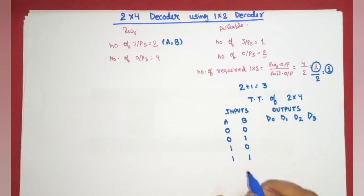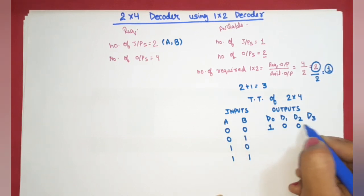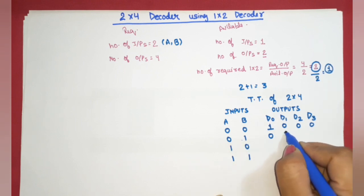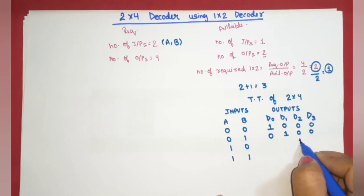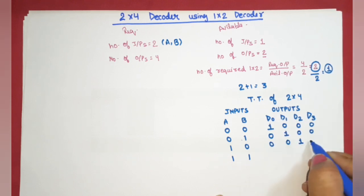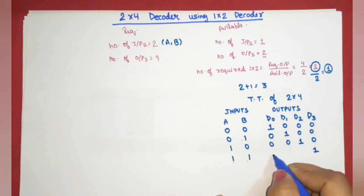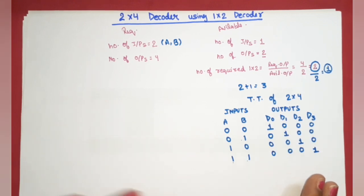For input 00, D0 is high and remaining outputs are zero. For input 01, D1 is high and remaining are zero. For input 10, D2 is high and remaining are zero. For input 11, D3 is high and remaining are zero.